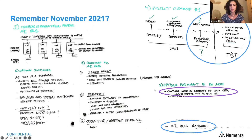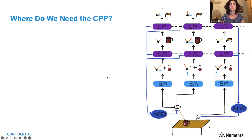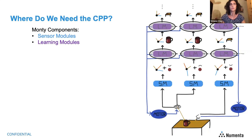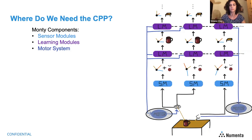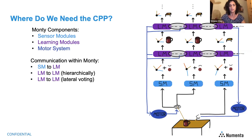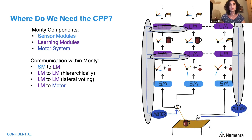It's still there even though we don't talk about it that often. So where do we actually need this protocol? As a refresher, Monty has three major components: sensor modules, learning modules, and motor systems. Communication within Monty includes sensor module to learning module, learning module to learning module hierarchically — which can also go top-down — and learning module to learning module through lateral voting.